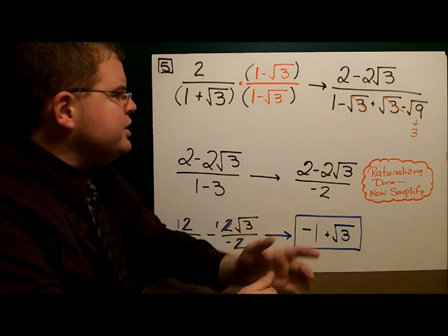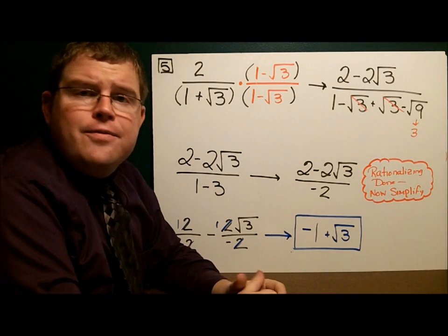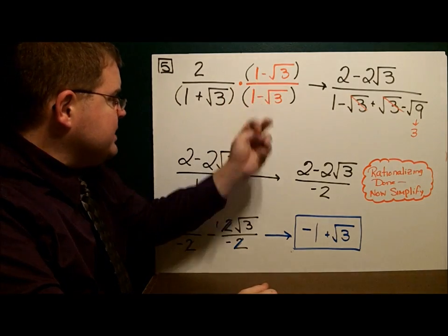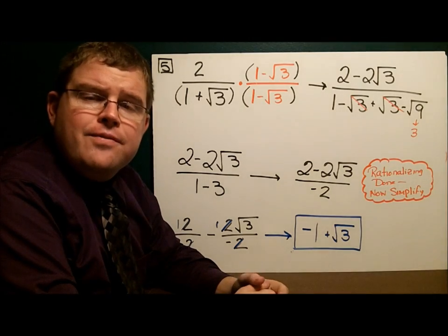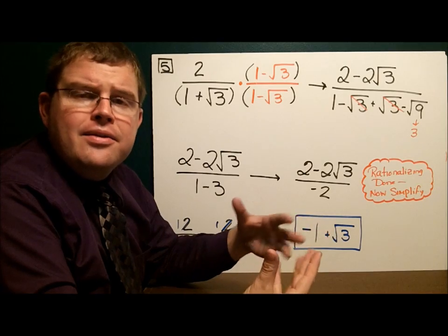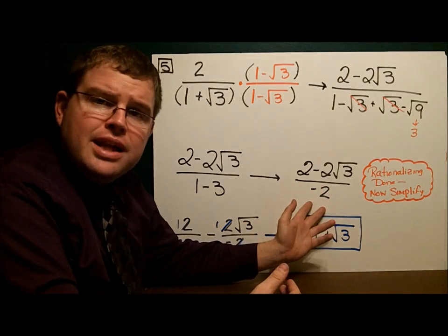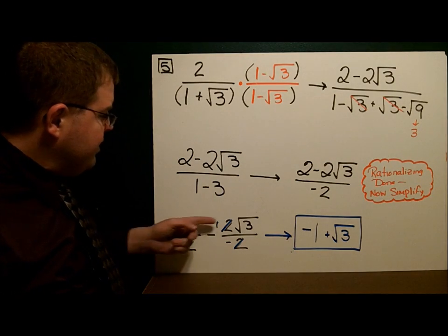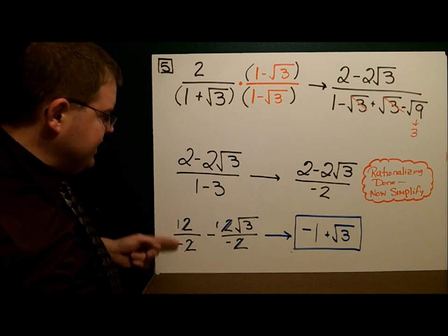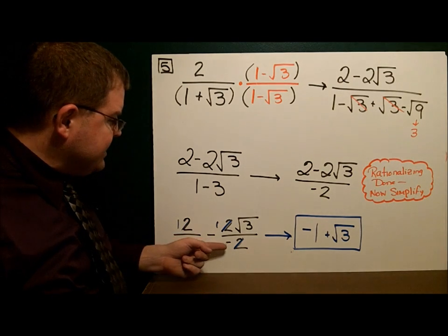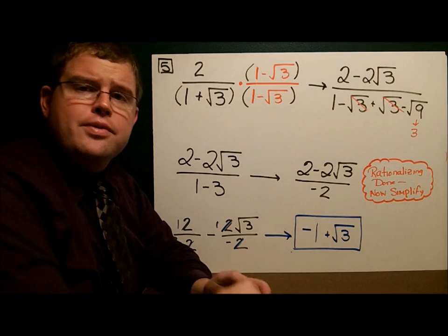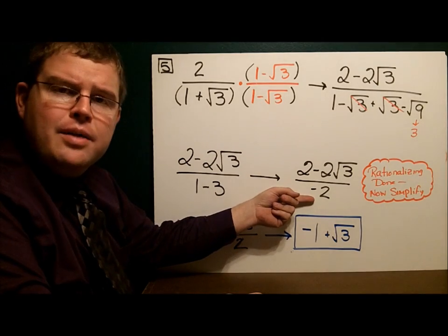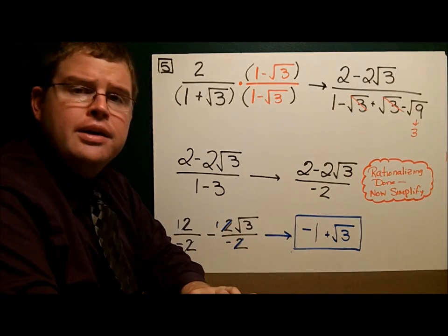So I have 2 minus 2 square roots of 3 over negative 2. The rationalizing is done — that's the new part. From here it's all old stuff. We simplify by breaking it in half and reducing the pieces: 2 over negative 2 and 2 square roots of 3 over negative 2. This gives me negative 1 minus negative square root of 3, so plus the square root of 3. Simplified, the final answer is negative 1 plus the square root of 3.